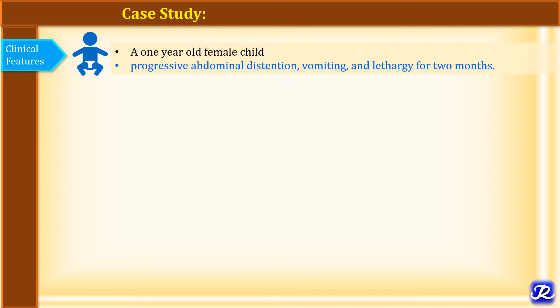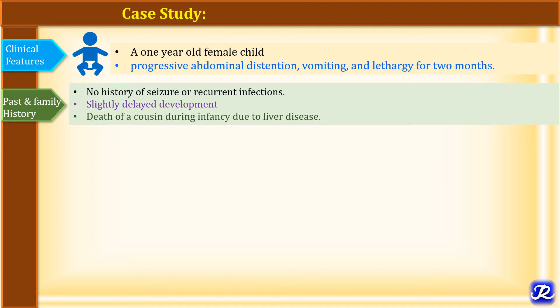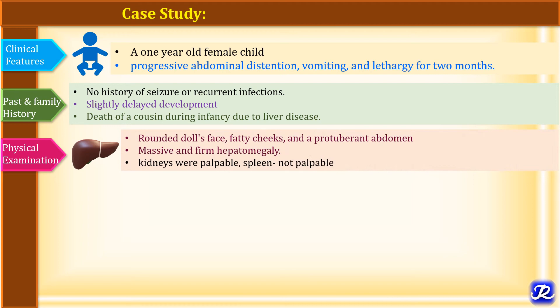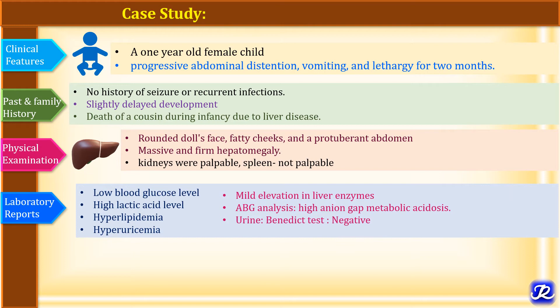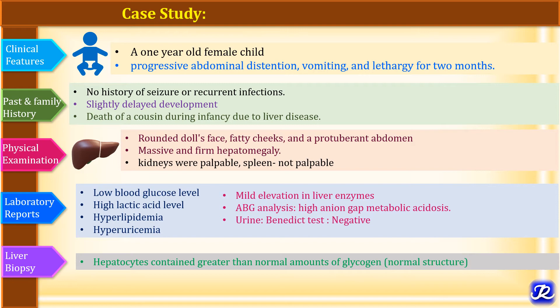A 1-year-old female child presented to the hospital with progressive abdominal distension, vomiting, and lethargy for 2 months. She had no history of seizures or recurrent infections. She had slightly delayed development and there was a history of death of a cousin during infancy due to liver disease. On physical examination, the child showed rounded doll's face, fatty cheeks, and a protuberant abdomen. She had massive and firm hepatomegaly. Kidneys were also palpable but spleen was not palpable. Laboratory reports showed low blood glucose (hypoglycemia), high lactic acid level, hyperlipidemia, hyperuricemia, mild elevation in liver enzymes. ABG analysis showed high anion gap metabolic acidosis and benedict test was negative. Liver biopsy showed hepatocytes contained greater than normal amounts of glycogen.